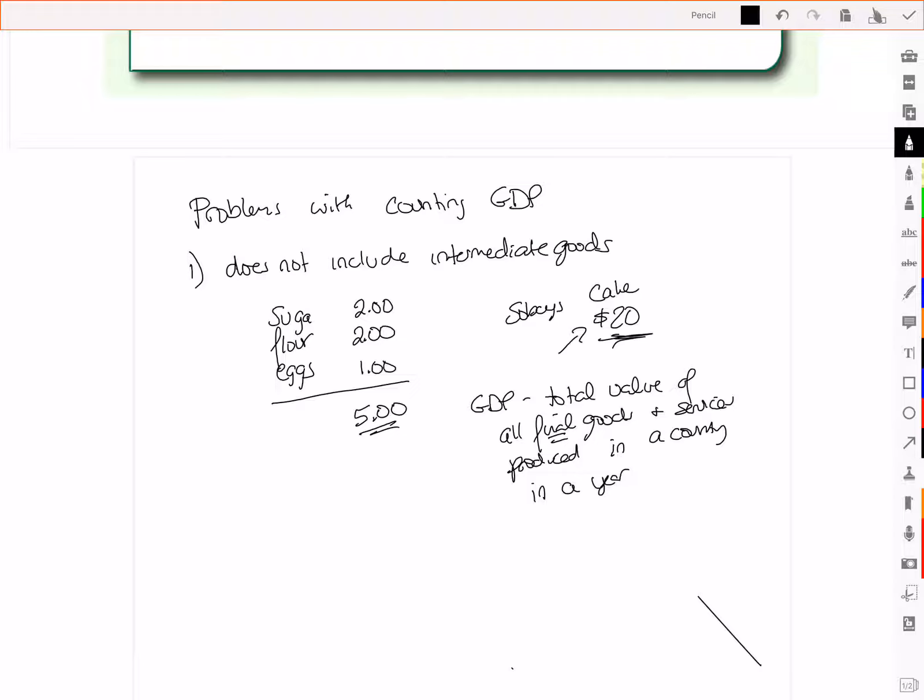But because of this challenge, because we have a lot of small businesses that might buy their materials at Costco or Sobeys, it can be difficult to accurately count GDP.